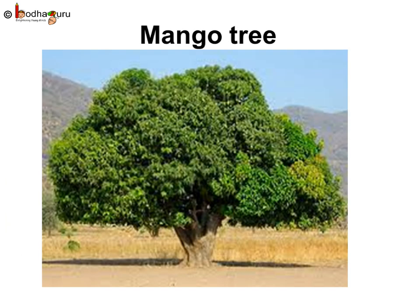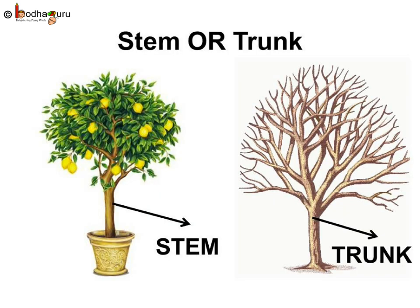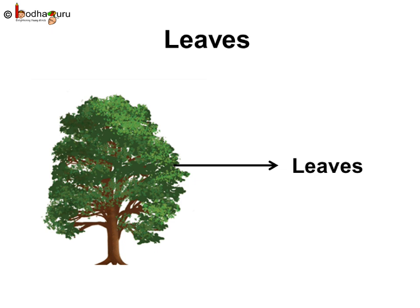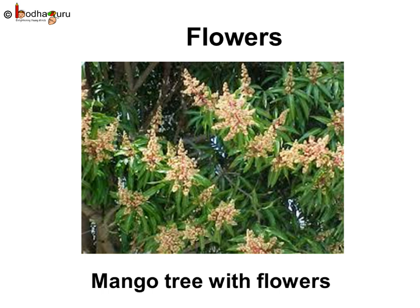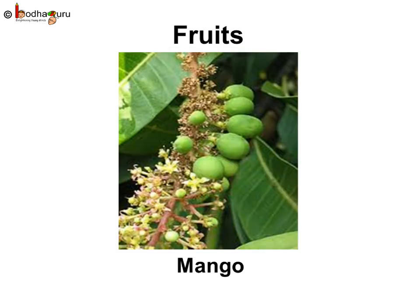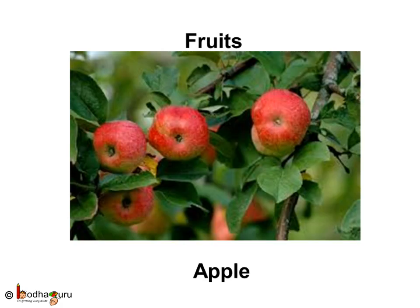Have you seen a mango tree? The stem of a big tree is strong, hard and woody, as in the case of the mango tree. So the stem of a big tree is called its trunk. Above the stem, the big tree divides into many branches, which are then covered with leaves. The trees have lots of flowers, like the flowers on the mango tree and the apple tree. The flowers then change into fruits — the flowers of the mango tree produce yummy mango fruits, and the apple tree flowers change into juicy apple fruits.